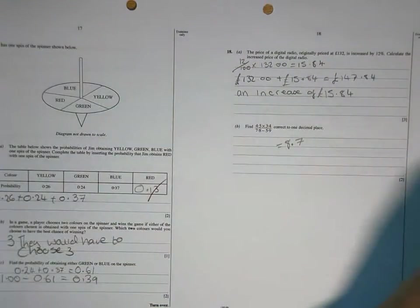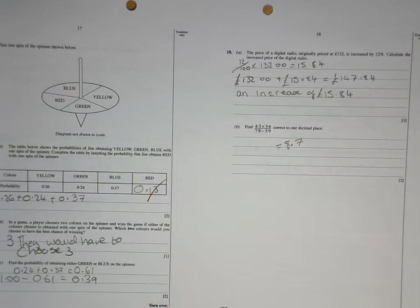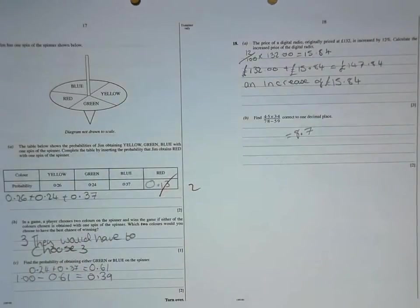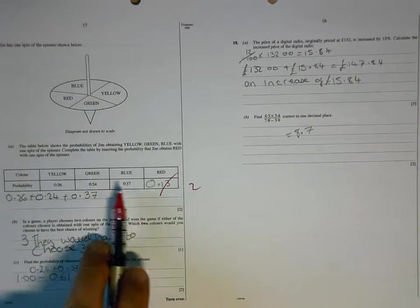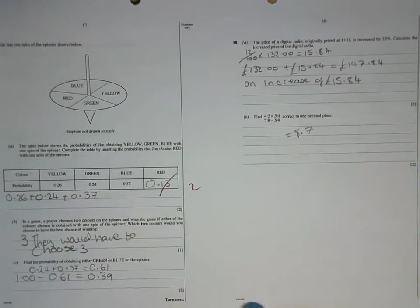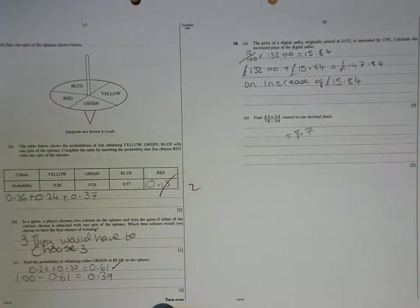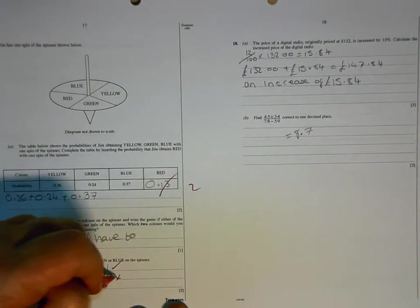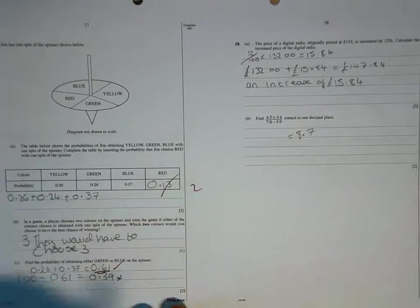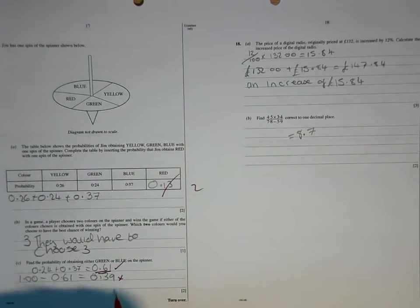So, 0.13 is correct. They would have to choose 3. No, you're looking there to say which two colours have the biggest chance of winning. So, you're looking for the largest decimal numbers. So, yellow and blue are the two that you're looking for there. Green or blue is 0.61. But you don't then take that away from 1. That's your answer. But because you haven't made clear which of those is your answer, I can't give you full marks.